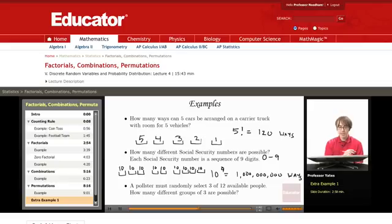The next one that we're looking at: A pollster must randomly select three of twelve available people. How many different groups of three are possible? Now, in this case, order does not matter.